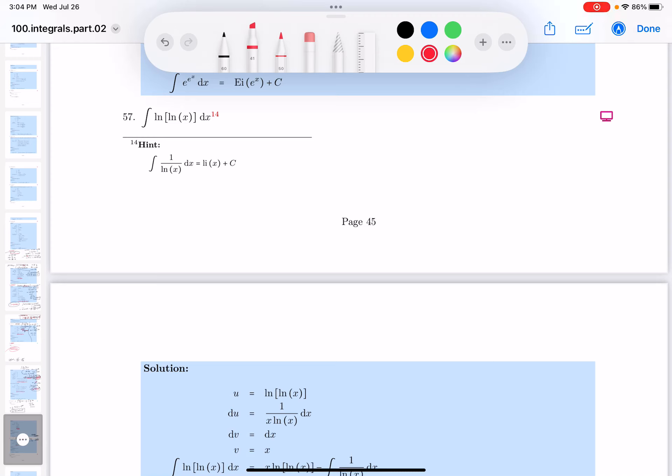Alright, problem 57. They're giving me a hint or telling me to eventually look like this guy over here. Looking at it, I really don't see it yet. So what we're gonna do is try to make a substitution, see if it works. If it doesn't work, try integration by parts.